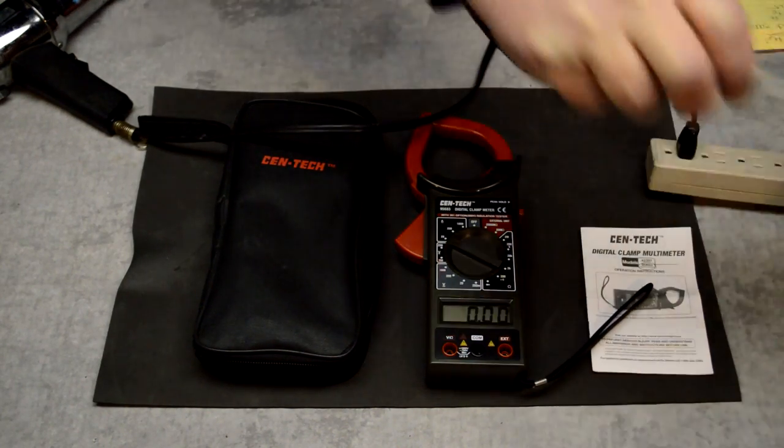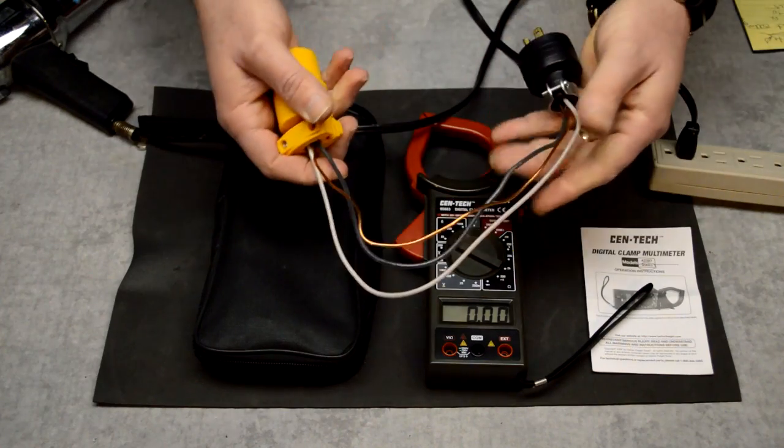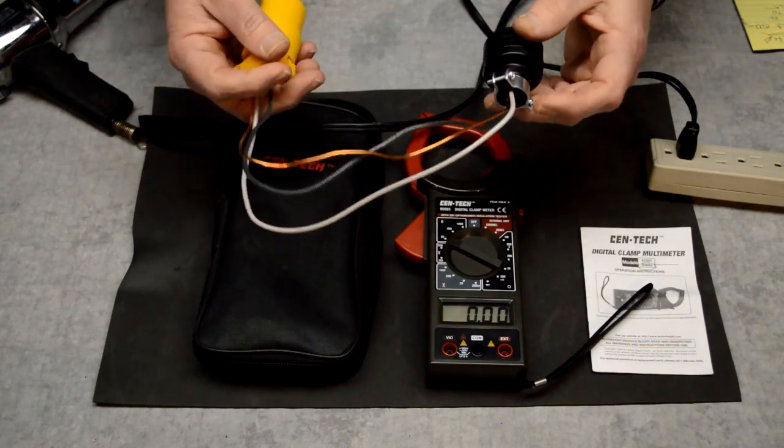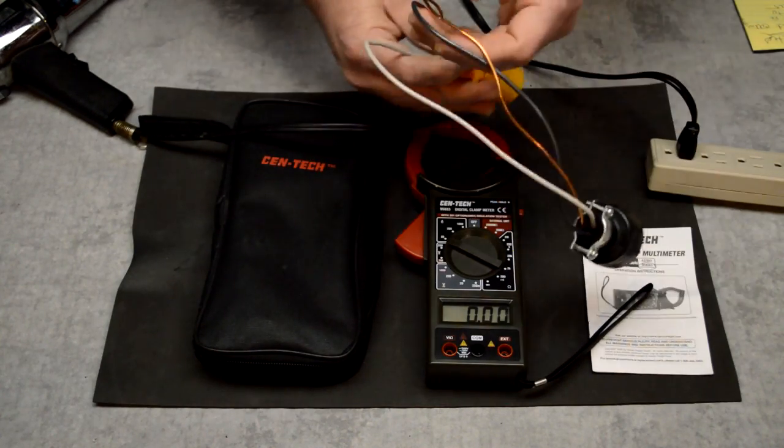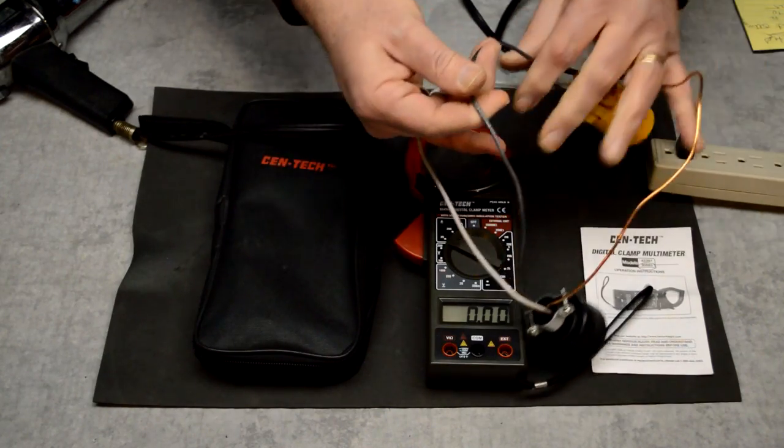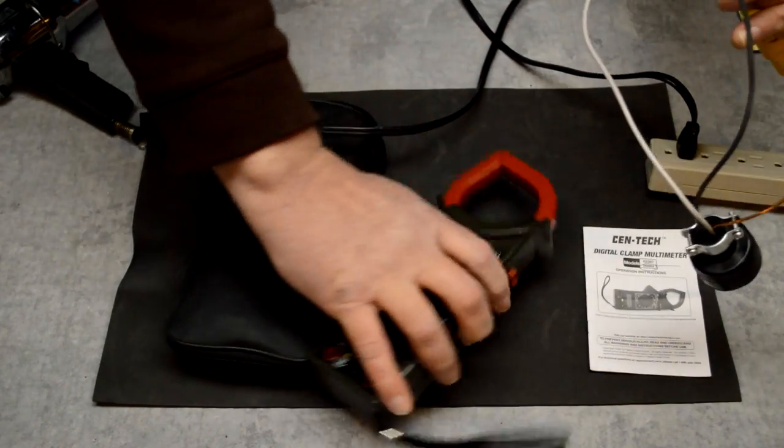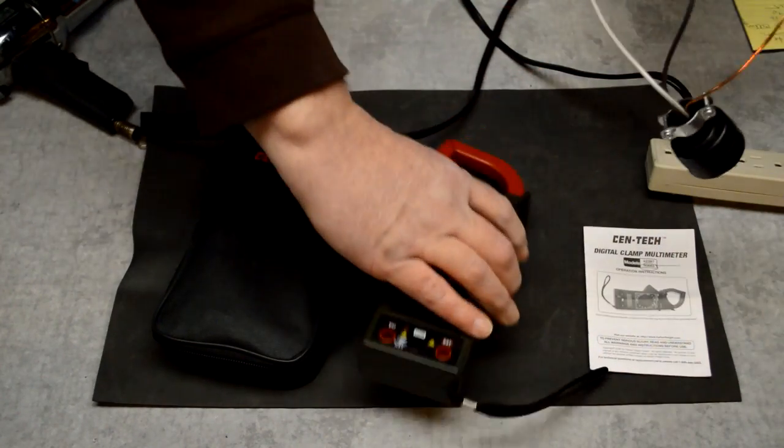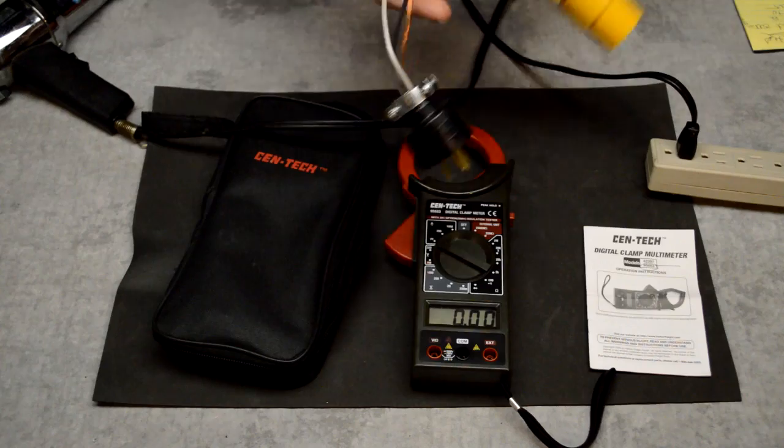And I made this little separation tester here. It's just a male and female plug end, and I've left the three wires individual without the jacket on it. So you can isolate the wires and clamp onto just one wire. Let's go ahead and take a look at a video I made of putting this thing together.